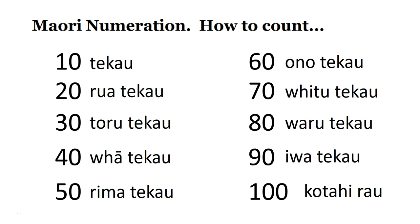So we're going to count in tens up to a hundred, and you can see it's quite logical, the way that the numbers work. So number ten — te kau. So one ten is te kau.